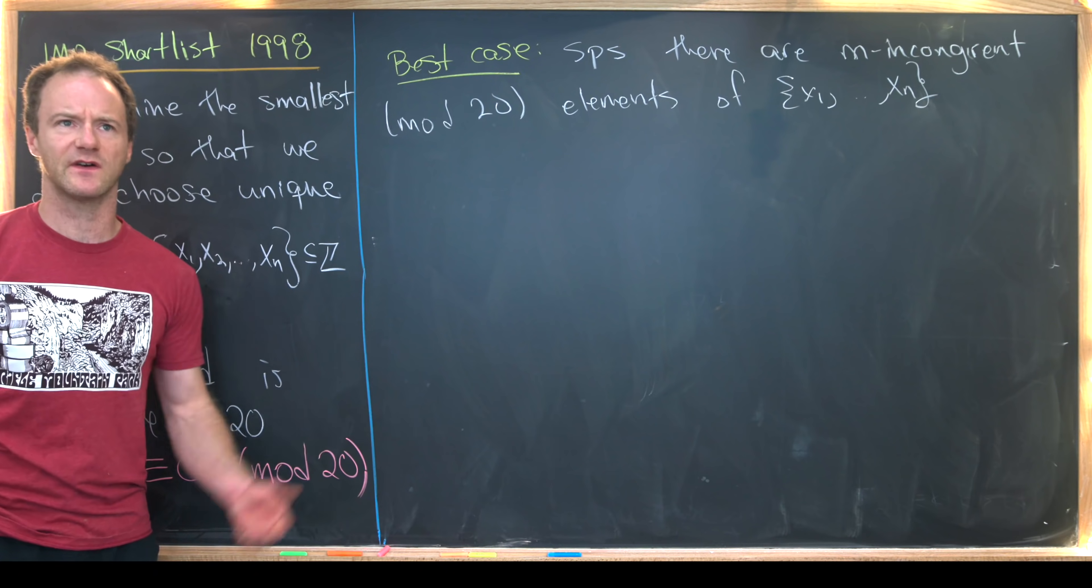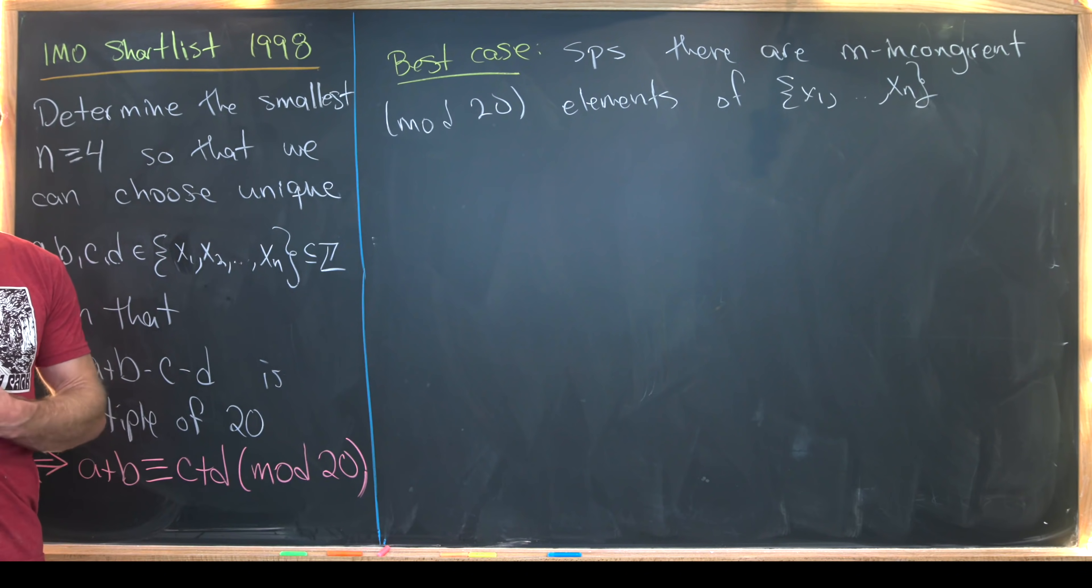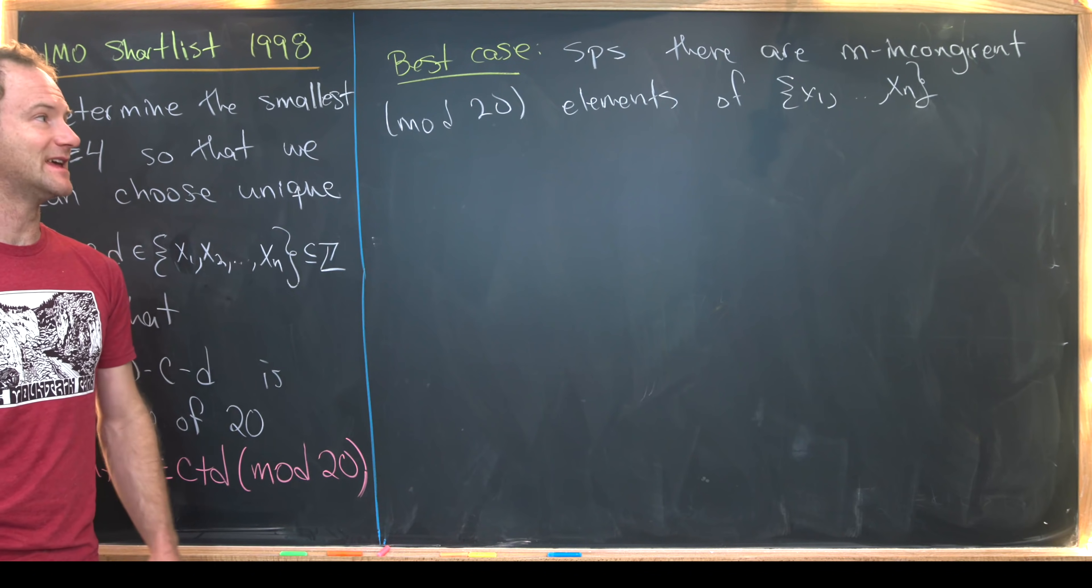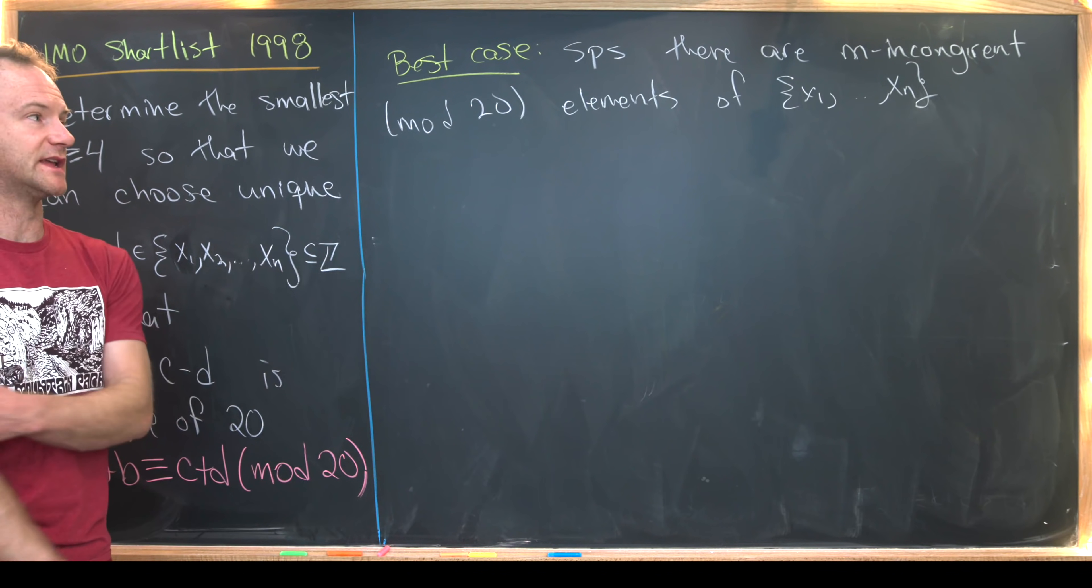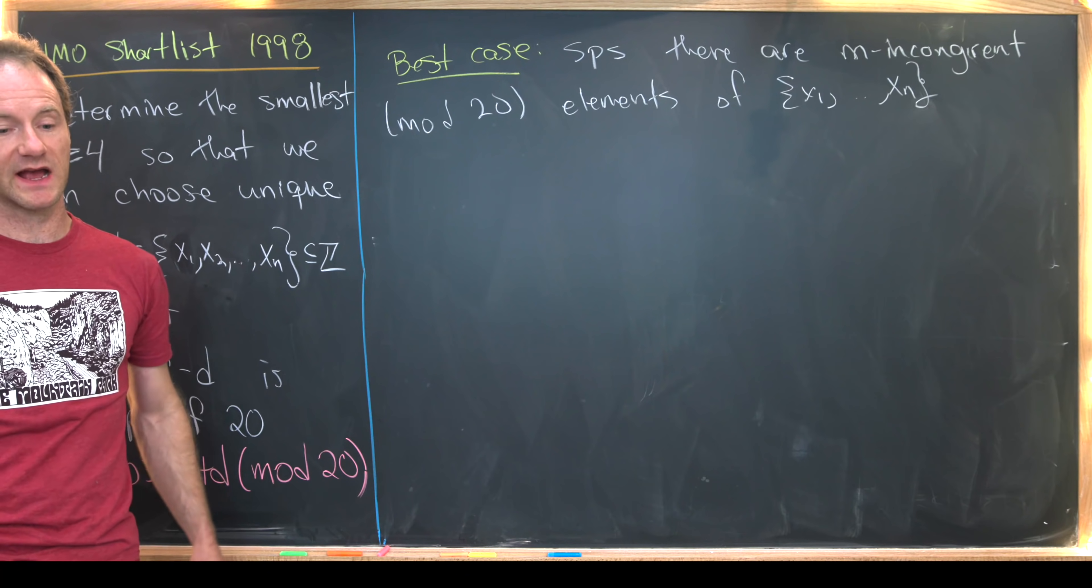Notice if we have elements that are congruent modulo 20, they're like pretty much acting exactly the same as each other. So putting one over here and putting one over here doesn't really do much. So we've got m incongruent mod 20 elements of x1 through xn.